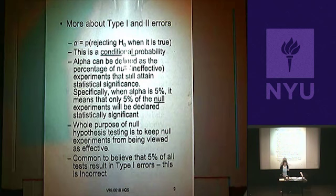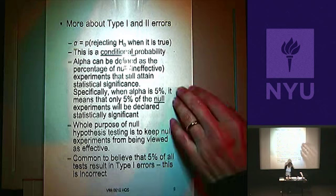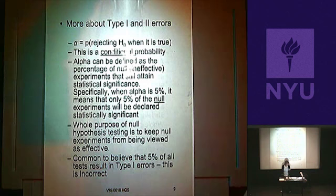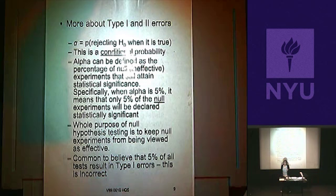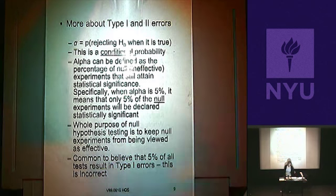It's typical for people to say 5% of all studies that are done are Type 1 errors — but that's not true. As the textbook says, alpha can be defined as the percentage of null or ineffective experiments that still attain significance. Those are experiments where the null is true and there is no effect. The problem is, we never know which ones those are.